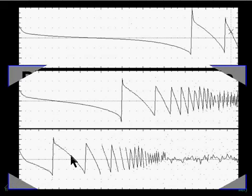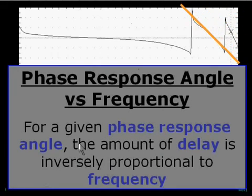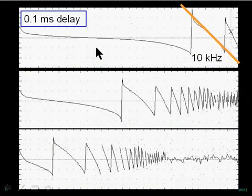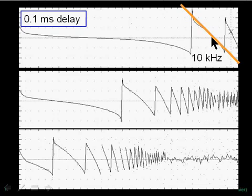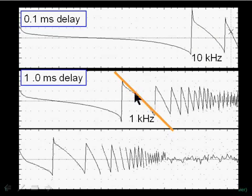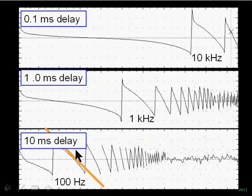The phase response angle relates to time over frequency. For a given phase response angle, the amount of delay is inversely proportional to frequency. In this example, 0.1 milliseconds of delay is one wavelength at 10 kilohertz, with the slope going down at about a 45-degree angle. That same picture appears at one kilohertz when we put in one millisecond of delay, also one wavelength. Ten milliseconds of delay creates the same picture at 100 hertz — one tenth the frequency. That is a picture of one wavelength of delay.